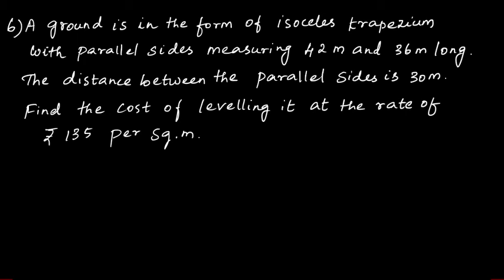Sixth question: A ground is in the form of isosceles trapezium with parallel sides measuring 42 meter and 36 meter long. The distance between the parallel sides is 30 meter. Find the cost of leveling it at the rate of Rs 135 per square meter.